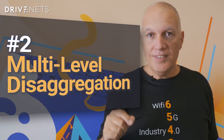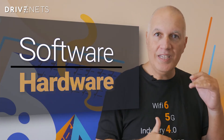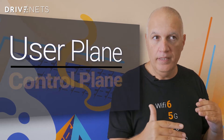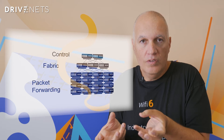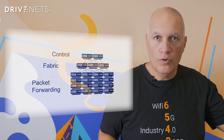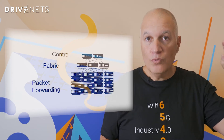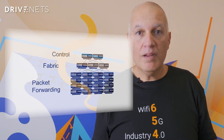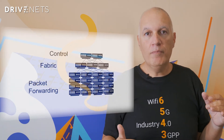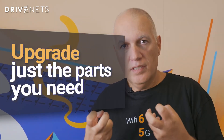Number two, multi-level disaggregation. That means we do not only disaggregate hardware from software — we also disaggregate the control plane from the user plane. And in the user plane, we also disaggregate the fabric from the packet forwarding, the ports. So if you need more ports, you upgrade only that part of the network. If you need more control processing power, you upgrade only the control part. If you need a higher capacity fabric, you upgrade only the fabric. This gives you the granularity to upgrade just the part you need, meaning much more efficiency in the way you use your hardware.